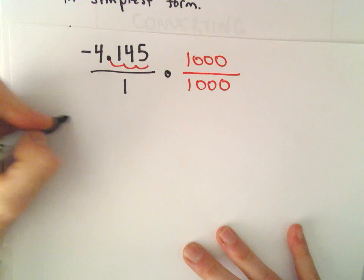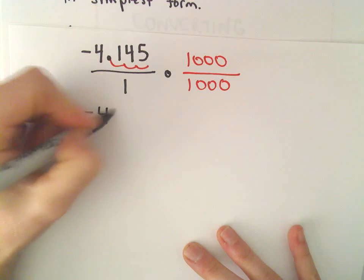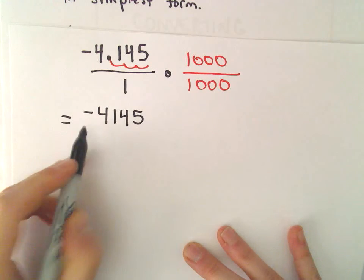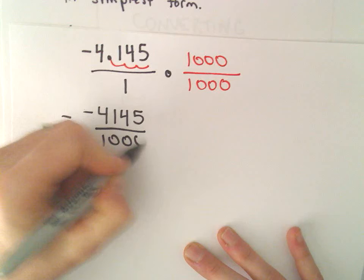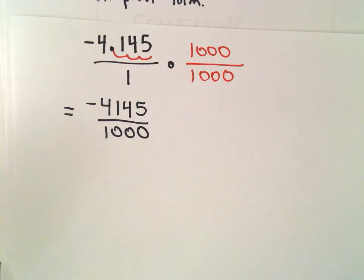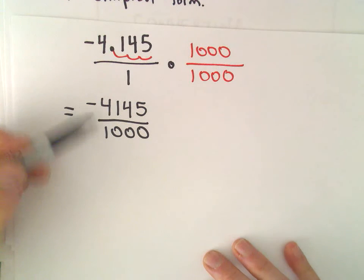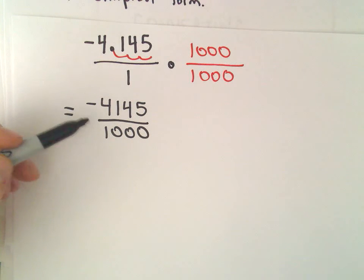Alright, let's see. That's going to leave us with negative 4,145 in the numerator over 1,000. Well, let's see. Again, lots of different ways that we could go about doing this.